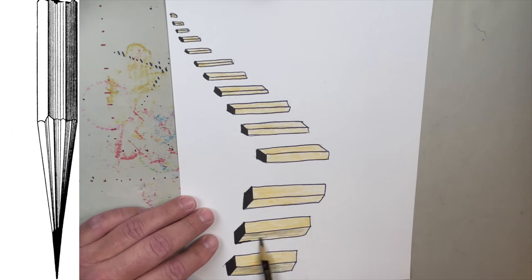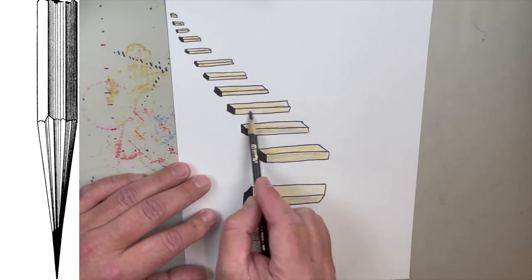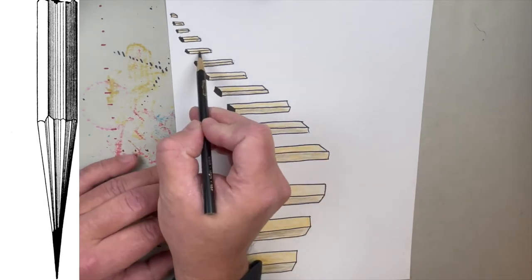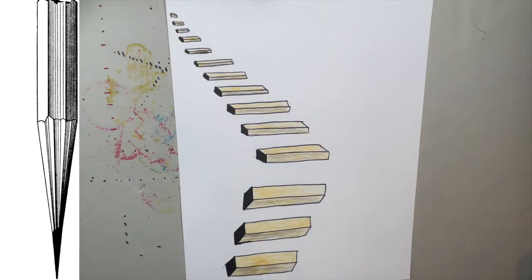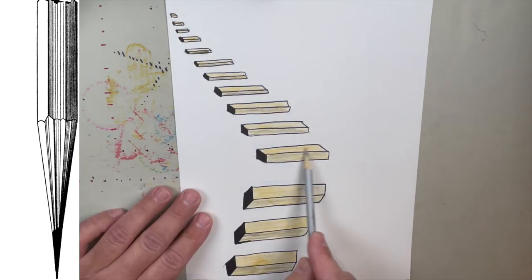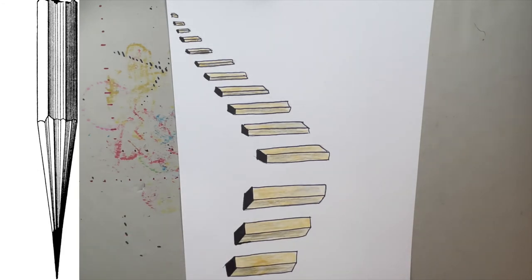And then maybe on these lower portions of some of these, I'll use like a dark gray or a black colored pencil just to give it a little bit of a shadow, kind of like an old wood effect. And then maybe kind of like a grayish silver pencil on some of these upper ones, just to make it look like an old wooden staircase.